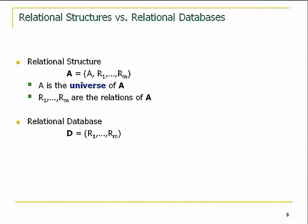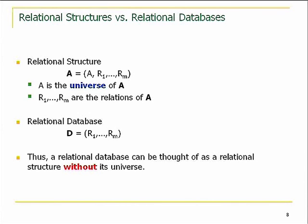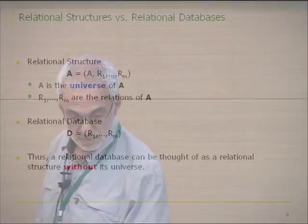You may ask: what is the difference between what we've been seeing all morning and databases? A relational structure has a universe that we have made explicit, plus a bunch of relations. A database is basically a relational structure in which the universe has not been made explicit—we only have the relations. That's an important difference which will very soon cause us some problems. Codd had the idea that these are dynamic objects; new elements may come into the picture and populate the relations, so he only made explicit the relations, not the universe. That's essentially the only difference between relational structures and databases.